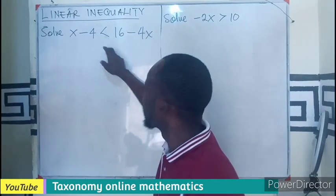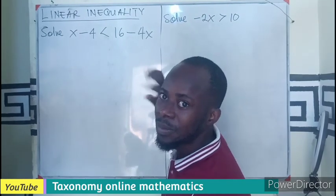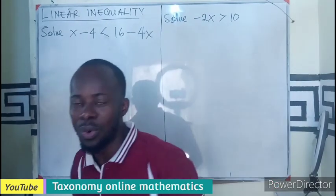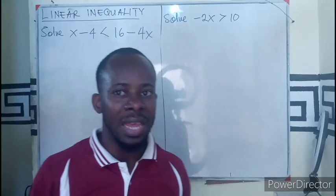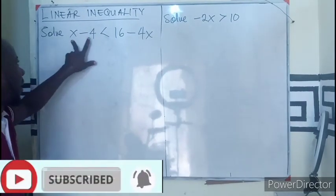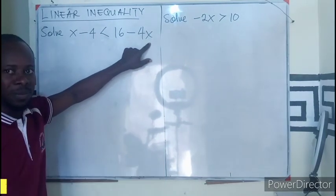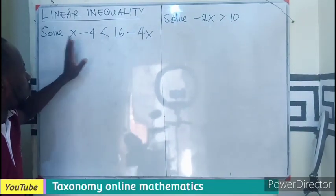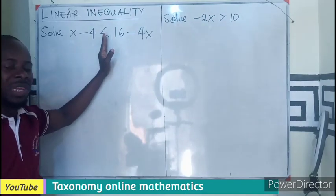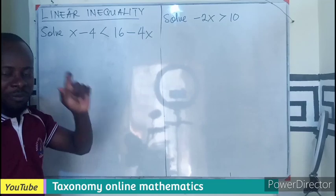If you are new, consider subscribing to the channel, like and follow. Here we have x - 4 < 16 - 4x. What we know is that this inequality sign always serves as a barrier, so we perform the rules of linear equation.